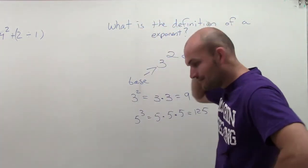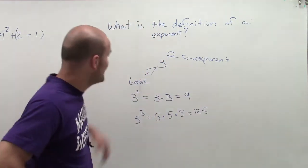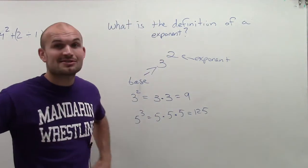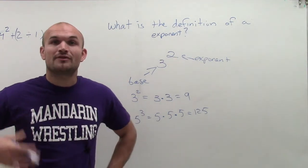So here, if the exponent says two, you've got to multiply your base two times. If the exponent says three, you're going to have to multiply your base by itself three different times.